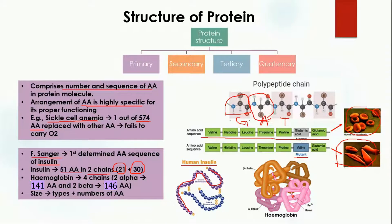Another example is hemoglobin, which carries oxygen. Hemoglobin is made up of four chains — two alpha chains and two beta chains. Here you can see the structure of hemoglobin with four chains: chains one and two are alpha chains, and chains three and four are beta chains. This is the proper structure of hemoglobin, and because of this structure it is able to carry oxygen. This is also an example of the primary structure of a protein.